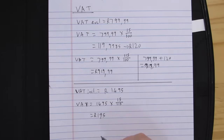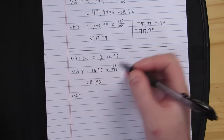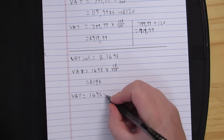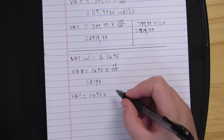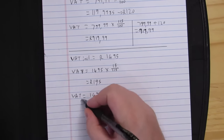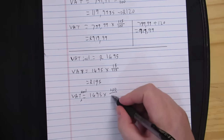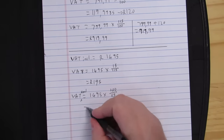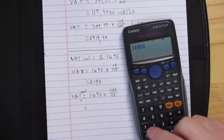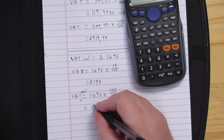If I want to work out the VAT exclusive amount, I have two options — I'm going to use the formula-based one. I want to get my VAT exclusive amount, and what I have been given is my VAT inclusive amount. So I take 1,495, multiply it by 100 over 115, and I get 1,300 Rand. That would have been my VAT exclusive amount.